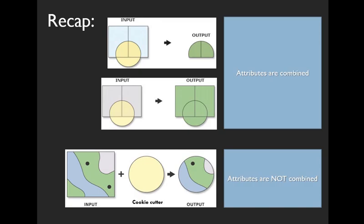So let's recap. In the top two graphics, attributes are combined. This means intersect and union. Intersect is the exclusive function which returns only the areas of overlap between the two input datasets. Union is an inclusive function producing an output dataset covering the full spatial extent of the data that you input.